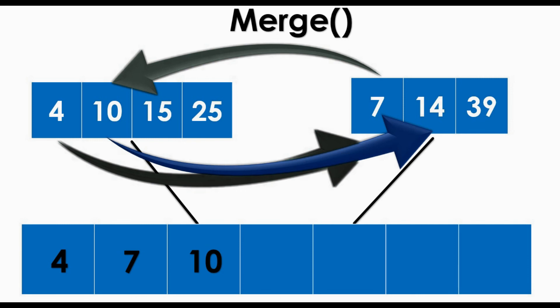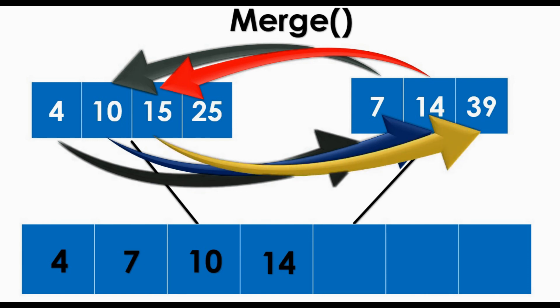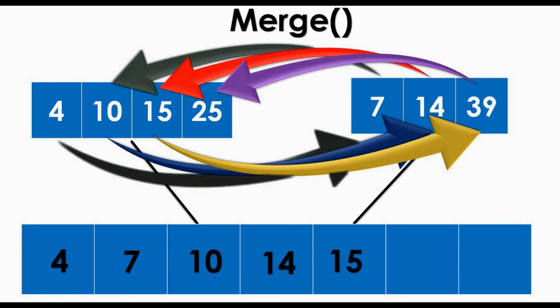Comparing 14 and 15: since 14 is lower, 14 is our fourth value. Comparing 15 and 39: since 15 is lower, 15 is our fifth value. Comparing 39 and 25: since 25 is lower, 25 is our sixth element. Finally, 39 is placed down as our last element in the array list.